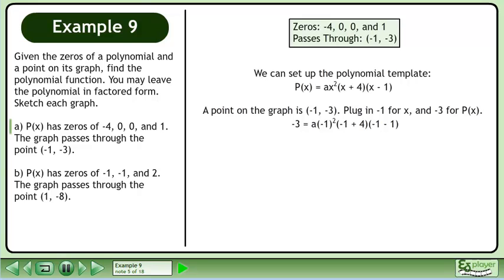A point on the graph is (-1, -3). Plug in -1 for x and -3 for P(x). Simplify. Simplify further. Divide both sides by -6 and reduce to get 1/2.